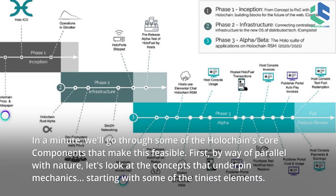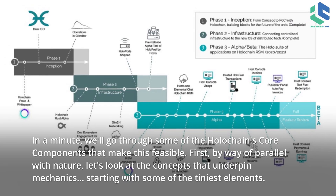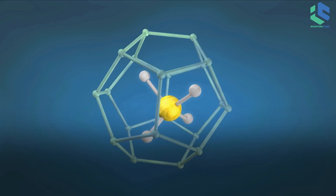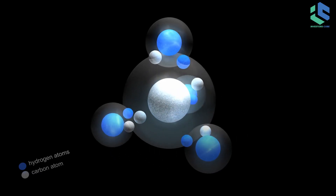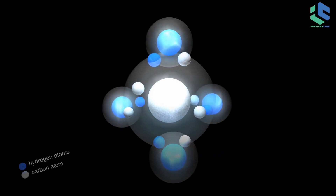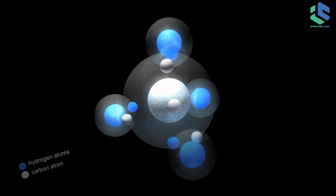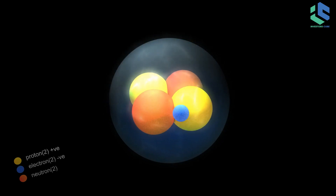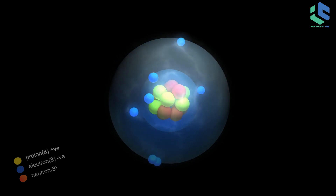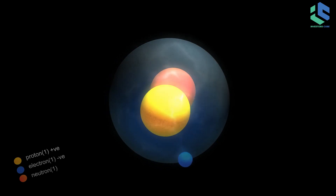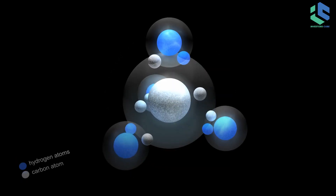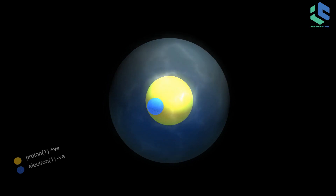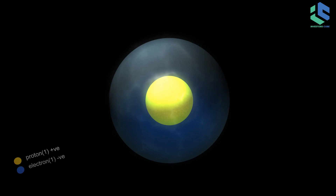Let's look at the concepts that underpin mechanics, starting with some of the tiniest elements. Consider the formation of a molecule of hydrogen chloride by the covalent bonding of a chlorine atom and a hydrogen atom. This necessitates the existence of a free electron in the hydrogen atom — one that is not shared with any other atom. What mechanism does the chlorine atom use to determine whether the hydrogen atom has an electron available? It's self-evident: the hydrogen atom represents whether or not a free electron is present in its current state.